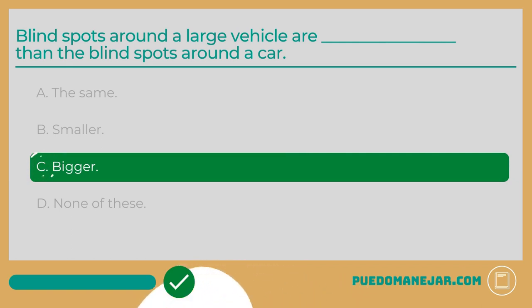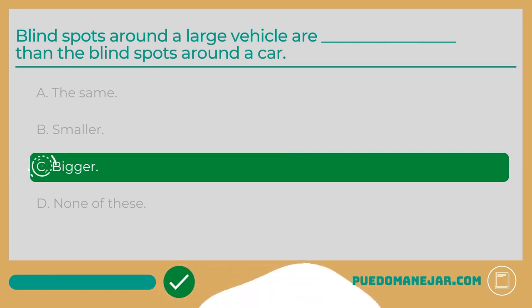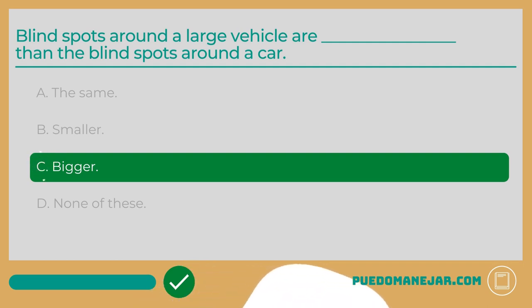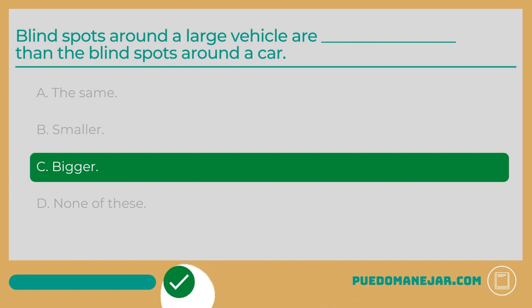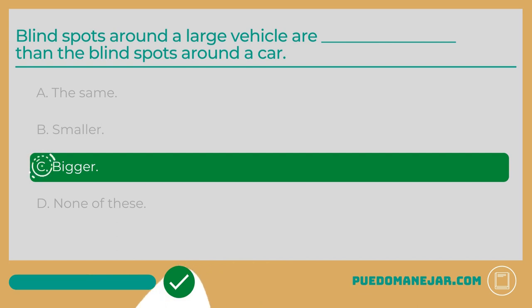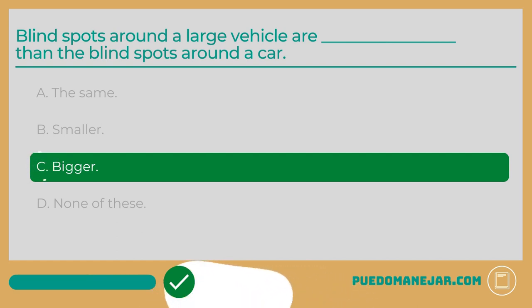Whenever you're sharing the road with a large vehicle like a truck, tractor-trailer, or bus, it is important to remember that larger vehicles have larger blind spots. The blind spots of larger vehicles like trucks are known as the no zones. Under no circumstances should you stay in the blind spot of a larger vehicle for more time than it takes to pass.